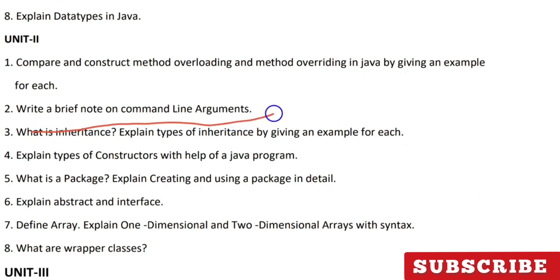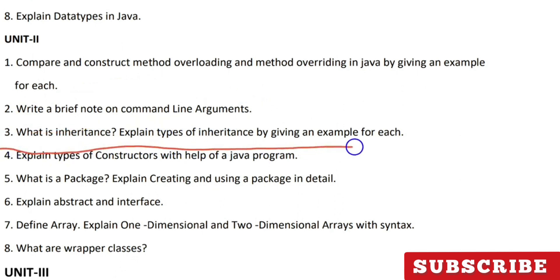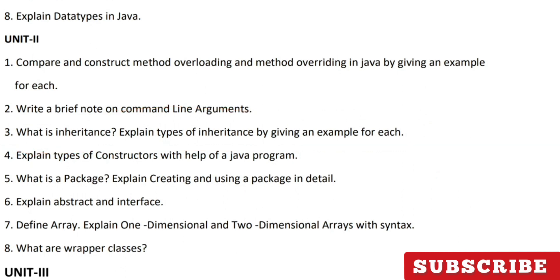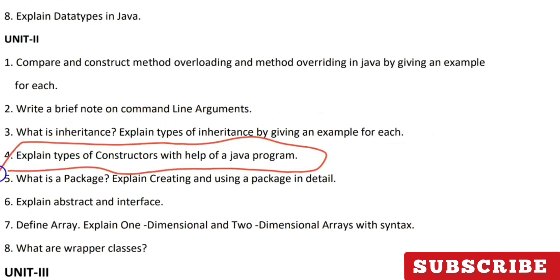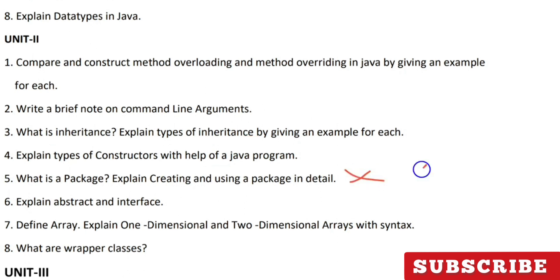The second question is: write a brief note on command line arguments. The third question is inheritance and types of inheritance available in Java — where you acquire the properties of one class into another. You will have single inheritance, multiple inheritance, and multilevel inheritance, and you need to explain each with a program example. The fourth question is types of constructors in Java, a topic you may have also covered in C++.